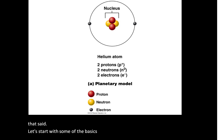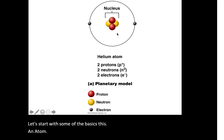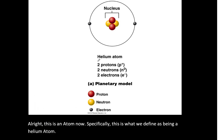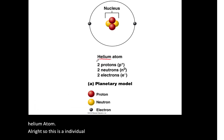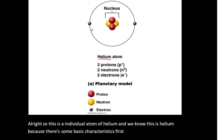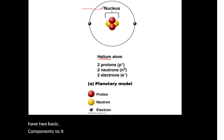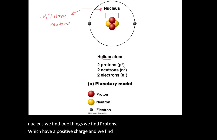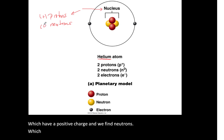This is an atom. Specifically, this is what we define as being a helium atom — an individual atom of helium. We know this is helium because of some basic characteristics. All atoms have two basic components: a nucleus, and inside of that nucleus we find two things — protons, which have a positive charge, and neutrons, which have a neutral charge. They don't have a charge.